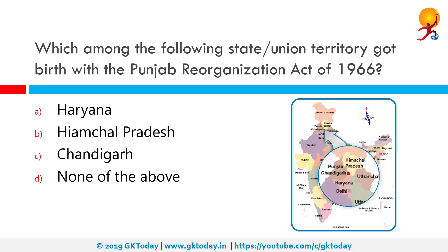Which among the following state or union territory was born with the Punjab Reorganization Act of 1966? The correct answer is Haryana. The Punjab Reorganization Act was passed by the Indian Parliament on 18 September 1966. It divided Punjab and created a new state of Haryana, and also transferred territory to Himachal Pradesh.